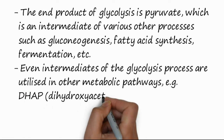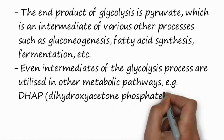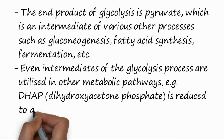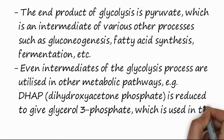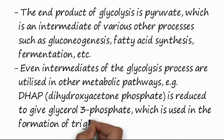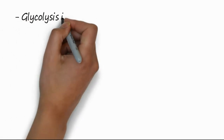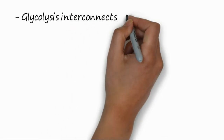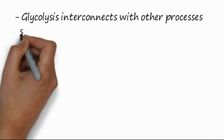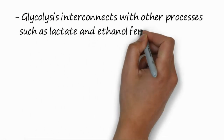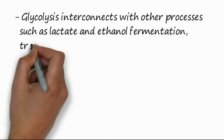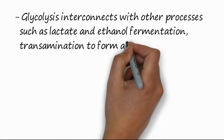For example, DHAP, dihydroxyacetone phosphate, is reduced to give glycerol-3-phosphate, which is used in the formation of triglycerides and fatty acids. Glycolysis also interconnects with other processes such as lactate and ethanol fermentation, which were discussed in the previous lecture.